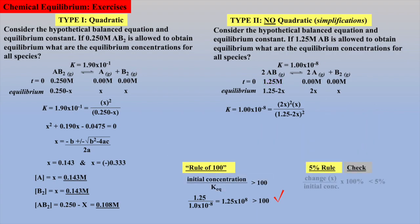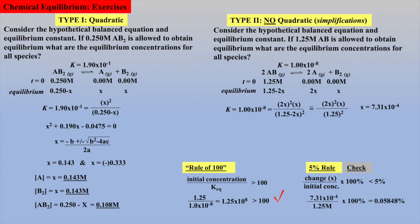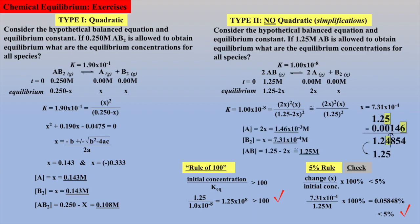Alternatively, one could use the 5% rule, which states that the change x must be less than 5% of the initial concentration for us to employ the simplification assumption. Using the 5% rule, we make the assumption that x will be less than 5% of the initial concentration, which simplifies our denominator, solve for x, and then check to see if x is indeed less than 5% of the original concentration — which it is, in this case much less. Thus, the simplification to the denominator is again proven valid. Then simply solve for the equilibrium concentrations using x as demonstrated previously. Keep in mind, your professor may favor either the rule of 100 or the 5% rule when simplifying to avoid the quadratic equation.